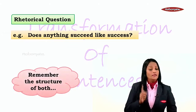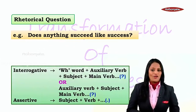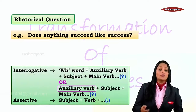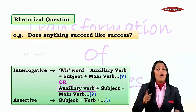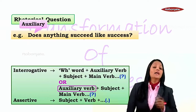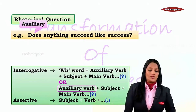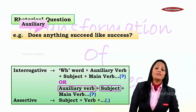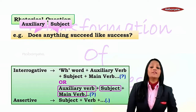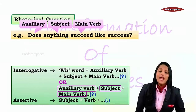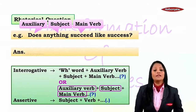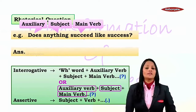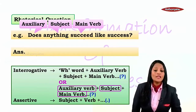Take 'Does anything succeed like success?' Remember the structure of an interrogative sentence: WH word + auxiliary verb + subject + main verb, or for a yes/no question, auxiliary verb + subject + main verb. Here we have the auxiliary verb 'does,' then the subject 'anything,' then the main verb 'succeed,' and additional words, and finally the question mark.